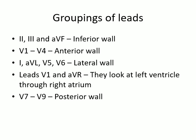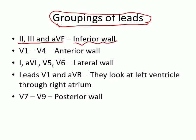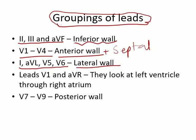For convenience, leads are grouped based on which wall of the heart they look at. Leads II, III, and aVF look at the inferior wall. Leads V1 to V4 look at the anterior and septal wall. Leads I, aVL, V5, and V6 look at the lateral wall. Lead V1 looks directly at the right atrium, and aVR looks through the right atrium into the cavity of the left ventricle. Leads V7 to V9, though less commonly used, are important for the posterior wall.